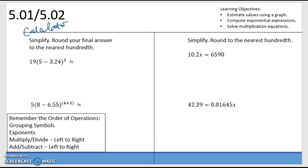19, open parenthesis, 5 minus 3.24, raise to the third power. It says round to the hundredth. That's two decimals. So, 103.58. If you don't have a scientific calculator or a graphing calculator, remember your order of operations, please and thank you.